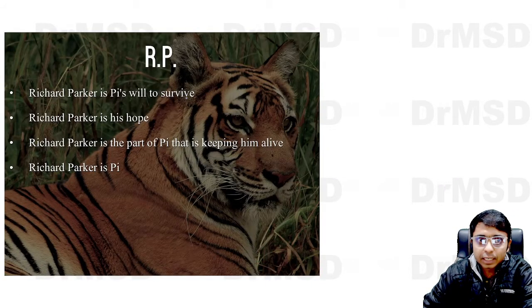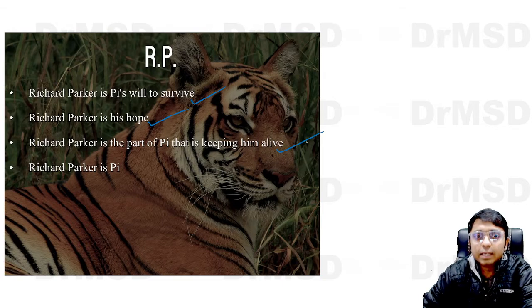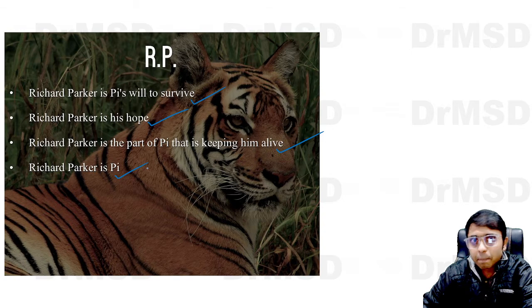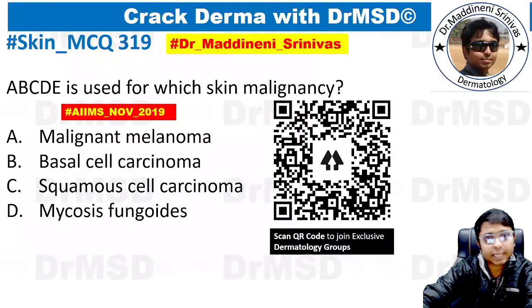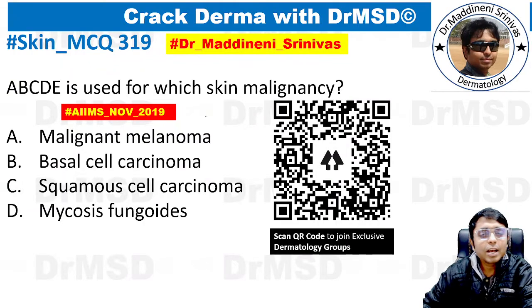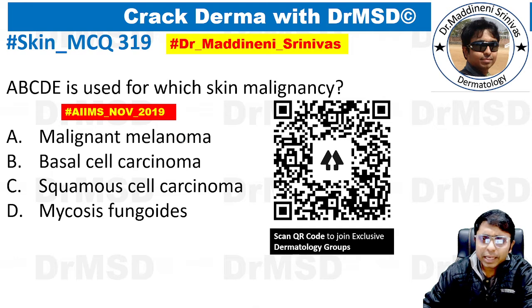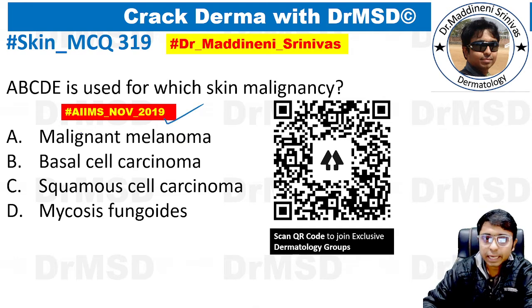Richard Parker is Pi's will to survive. Richard Parker is his hope. Richard Parker is a part of Pi that is keeping him alive — Richard Parker is Pi. In that movie, Richard Parker is the name of the tiger. So this is a question I asked today in the Telegram group, and it is a very straightforward easy question which was asked in AIIMS November 2019.